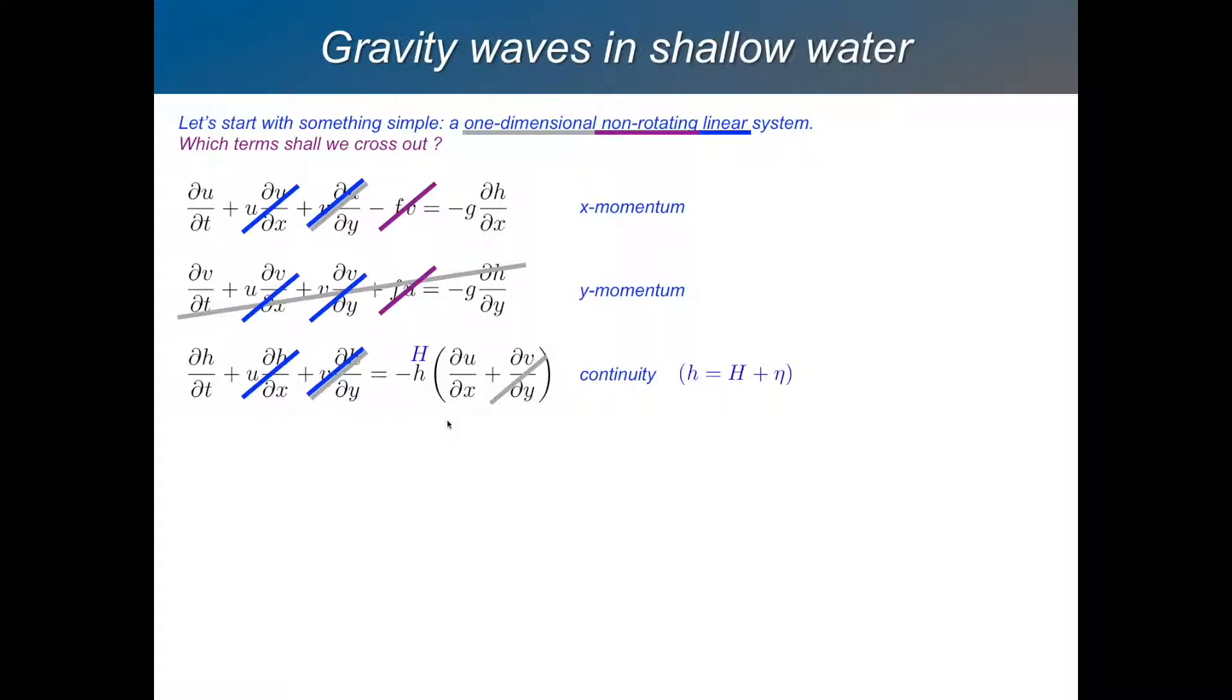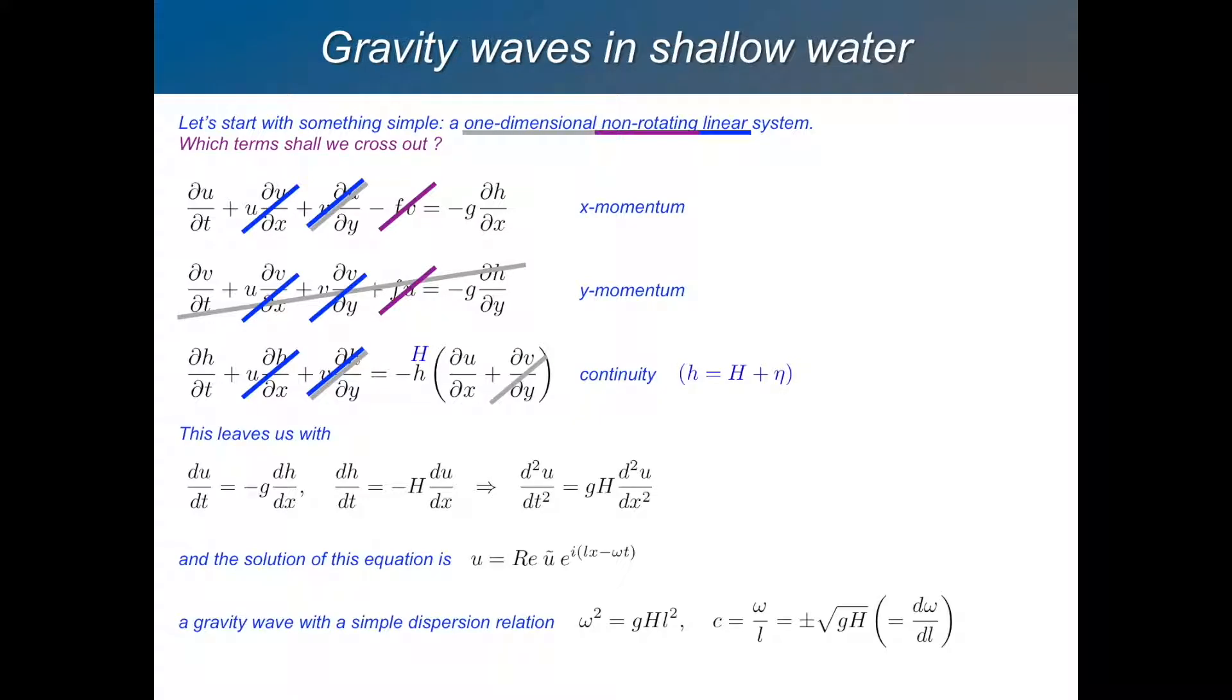And then, of course, this term here is d eta by dt. So what can we do with that? Well, what's left over then is an equation for du by dt, an equation for dh by dt. And we can just differentiate this equation with respect to t and this equation with respect to x.